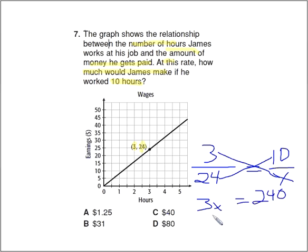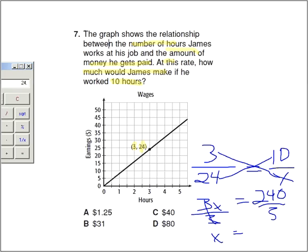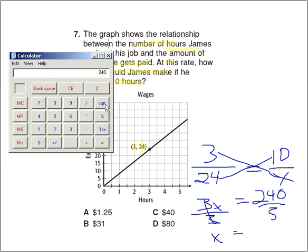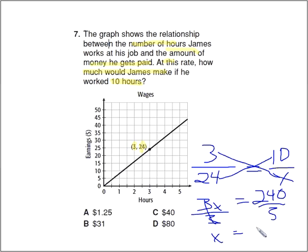How do I isolate the X? I divide each side by 3. 3 divided by 3 is 1 or just X. I could write 1X. 240 divided by 3. I'm not really cheating. It's 80. So the answer is 80. The question is, how much does he get paid? For 10 hours, he gets paid $80. So it would be D.